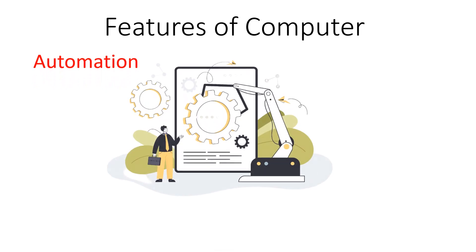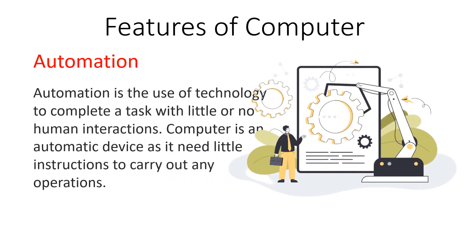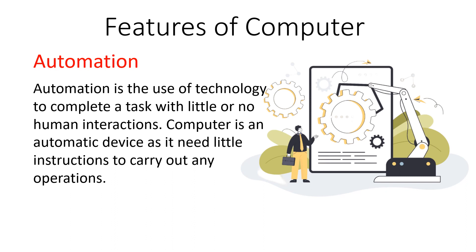The last feature is automation. Automation is the use of technology to complete a task with little or no human interaction. Our computer system is capable of doing tasks automatically because it requires very few commands or interactions from the user. We just need to give instructions with a few clicks and the rest of the work is done by our computer system automatically, making it a very useful and important device.